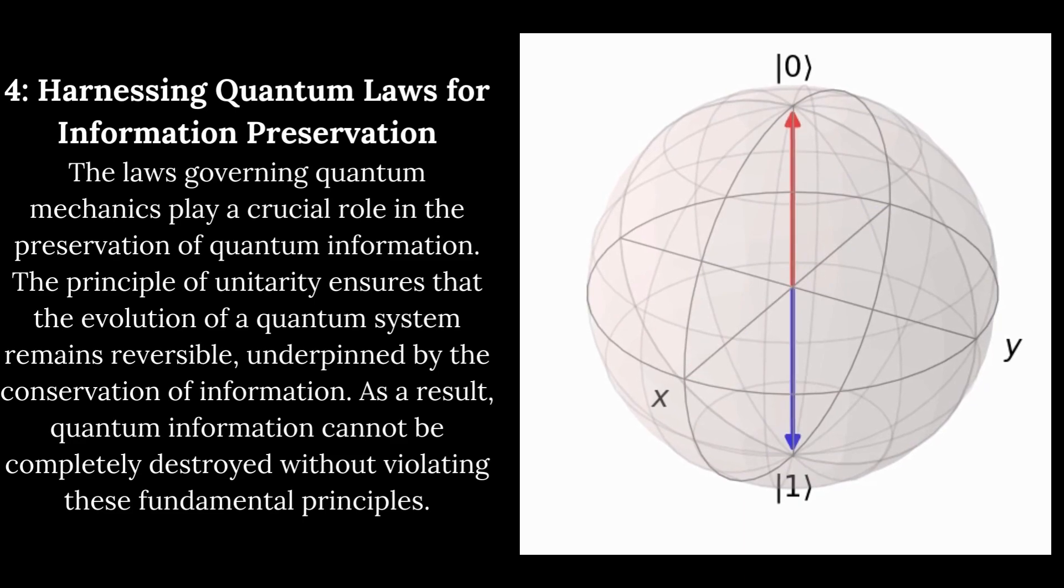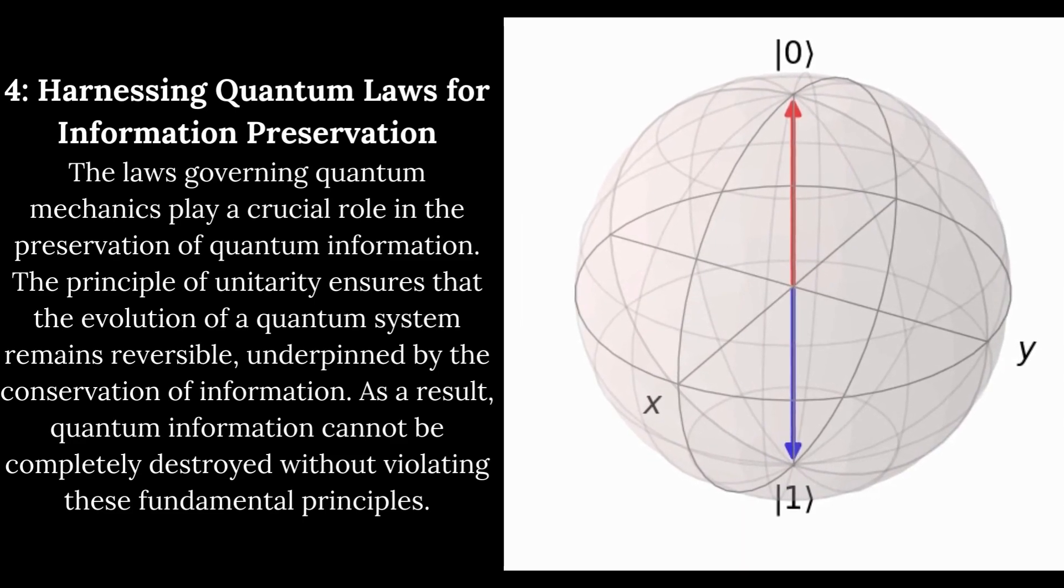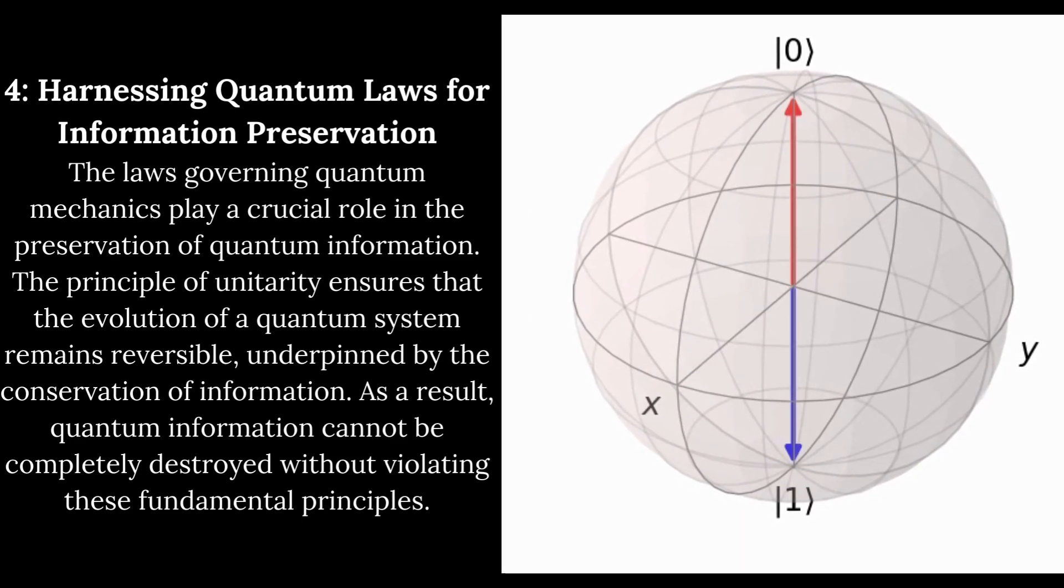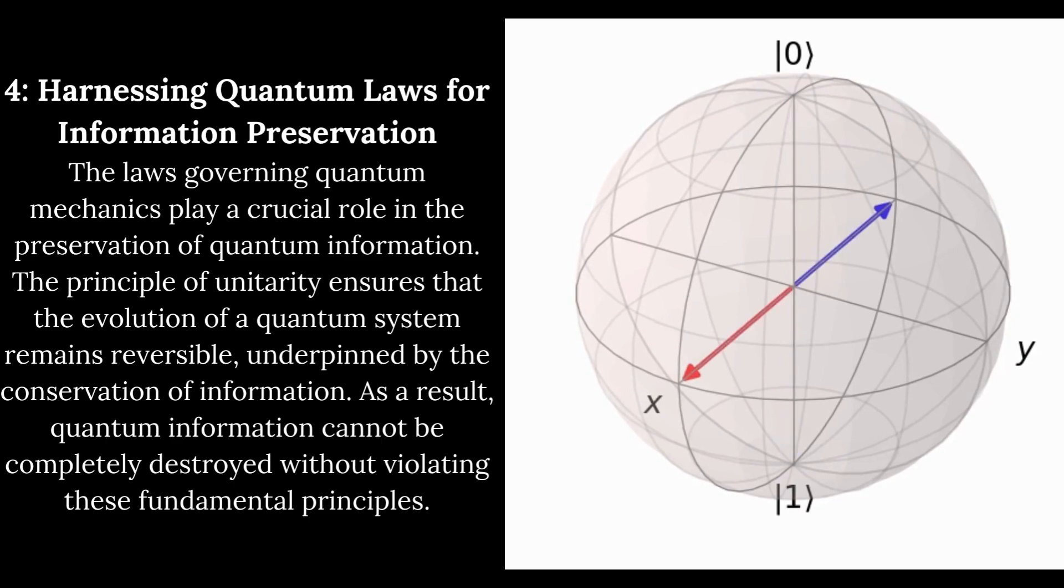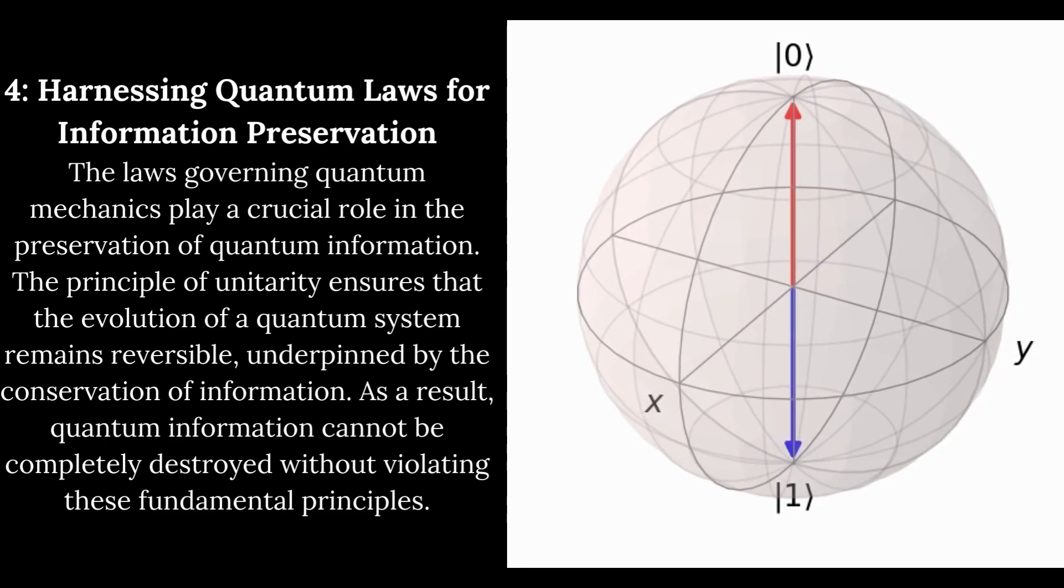Harnessing Quantum Laws for Information Preservation. The laws governing quantum mechanics play a crucial role in the preservation of quantum information. The principle of unitarity ensures that the evolution of a quantum system remains reversible, underpinned by the conservation of information. As a result, quantum information cannot be completely destroyed without violating these fundamental principles.